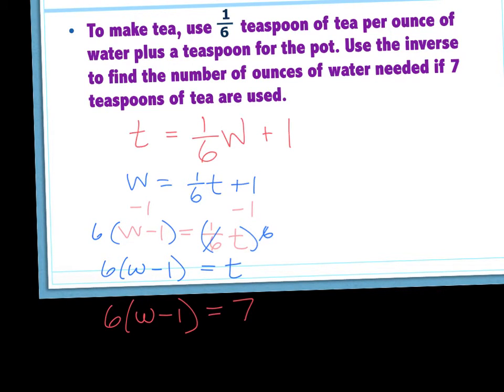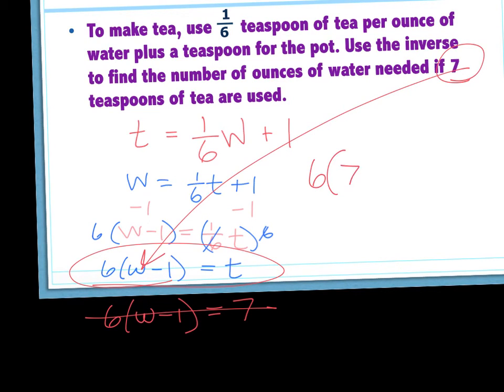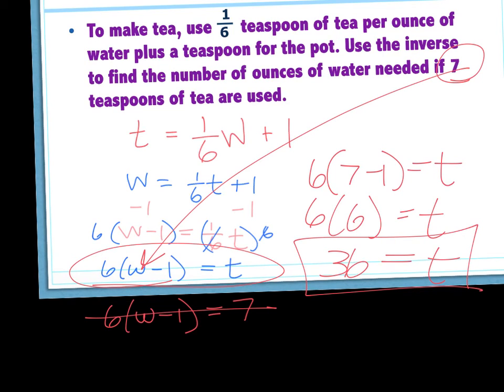Okay. So once we find the inverse, right? So we're saying that this is not here. We're saying this is the inverse, which could have been six W minus six equals T as well. Like we could have distributed that. But when it wants you to plug back in, we have literally swapped these variables. We have said the tea is now the water, and the water is now the tea. So if it says to find the number of ounces of water needed if seven teaspoons of tea are used, we actually have to plug that seven in the place of the water. So I would do six times seven minus one equals T. And then six times six equals T. And T equals 36. That makes much more sense. Okay. So typically when you're solving, you're fine. We haven't switched the variables. But this time we actually said that the W became the T and the T became the W. Which is why we'd need to switch it. Does that make sense? Yeah. Okay.